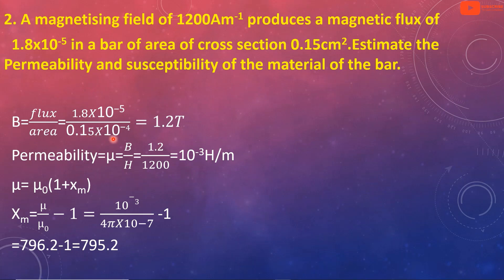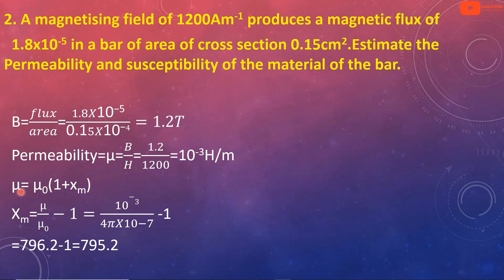The magnetic field B and the magnetizing field H are given. B is 1.2 and H is 1200. Permeability mu equals B divided by H, which is 1.2 divided by 1200, equal to 10⁻³ Henry per meter. That is the permeability.